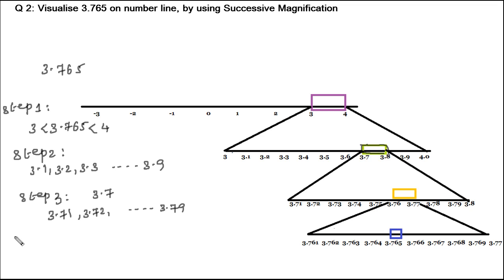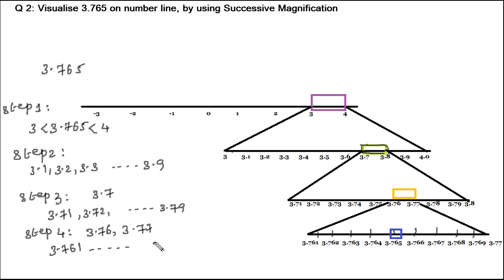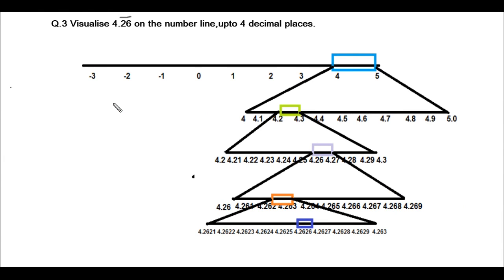Now looking at the second digit after the decimal point, it is 6, giving us 3.76. In step 4, we take the portion between 3.76 and 3.77 and divide it into 10 equal parts: 3.761, 3.762, 3.763, 3.764, and so on up to 3.769. From this we can locate 3.765 on the number line.